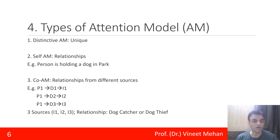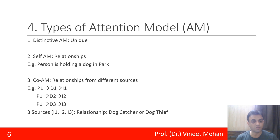The third type is the co-attention model, where relationships are identified from different sources. For example, person 1 holding a dog in image 1, person 1 holding a dog in image 2, and person 1 holding a dog in image 3. From these three sources, we identify that the relationship could be that the person is a dog catcher or a dog thief. This is identifying relationships from different sources.